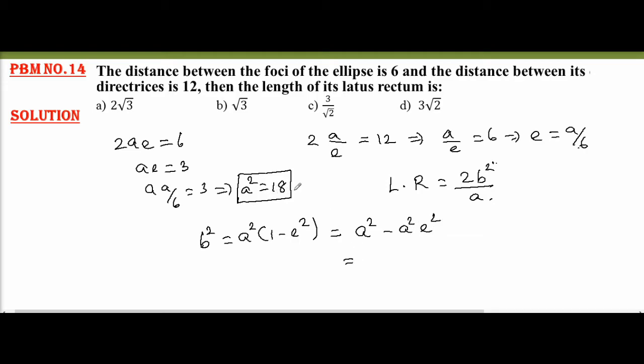I have written a² is 18 minus ae equals 3. Therefore, a²e² is 9. That gives me b² equals 9.